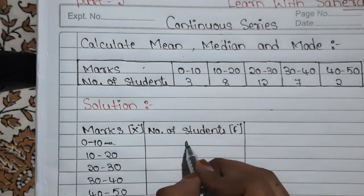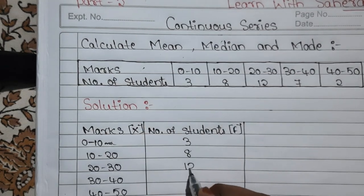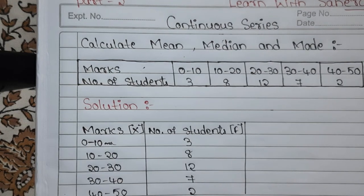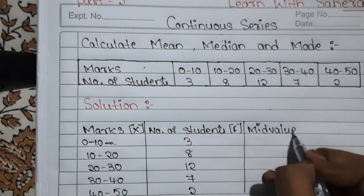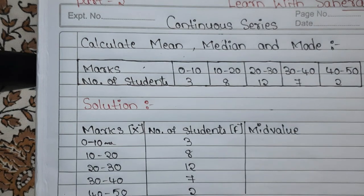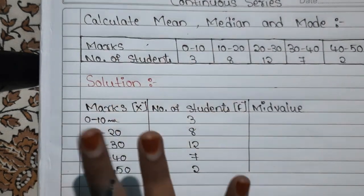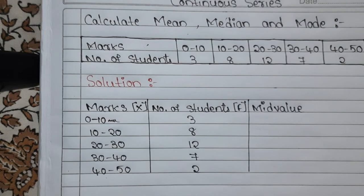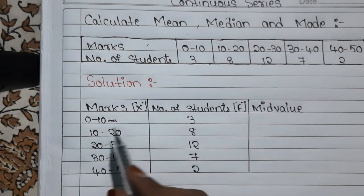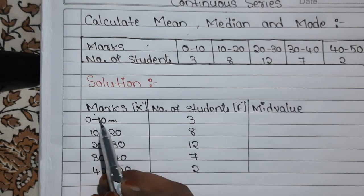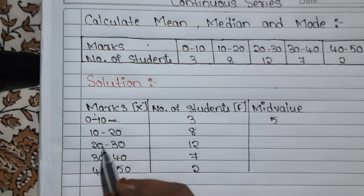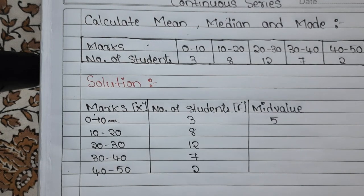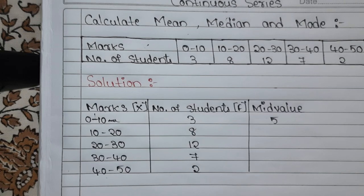The number of students are: 3, 8, 12, 7, 2. Now you have to find the mid value. When calculating mean in continuous series, you need to use the mid value, unlike discrete series where no mid value is needed. The mid value is the number lying in between both class boundary values. For 0 to 10, the mid value is 5.